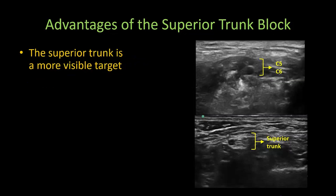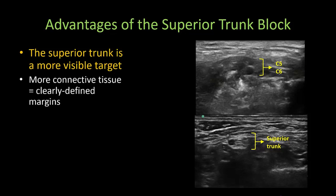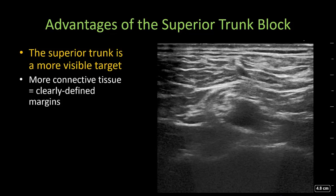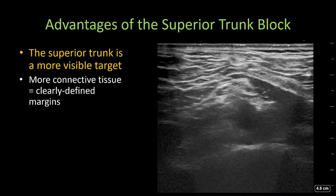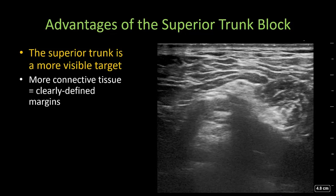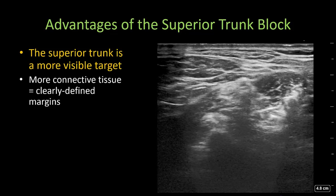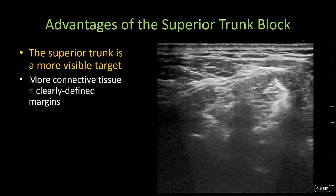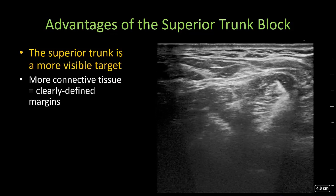The superior trunk is also a consistently more visible target. It has gathered more connective tissue around it, so it has clearer hyperechoic margins compared to the roots. In this video, tracing up from the supraclavicular area, the superior trunk is clearly identifiable. But once in the interscalene area, the roots are very hard to distinguish from the surrounding muscles and tissues.